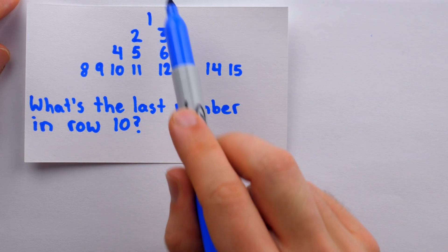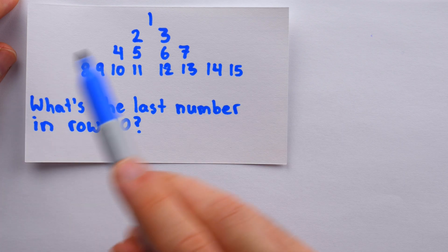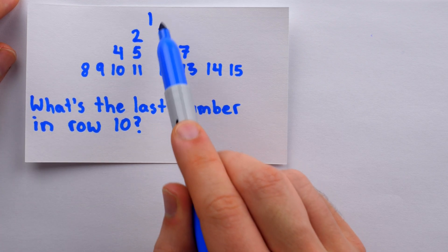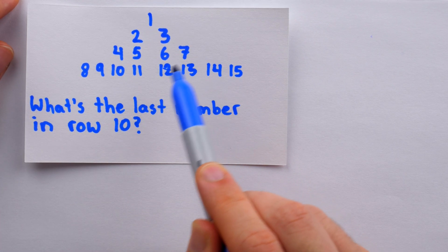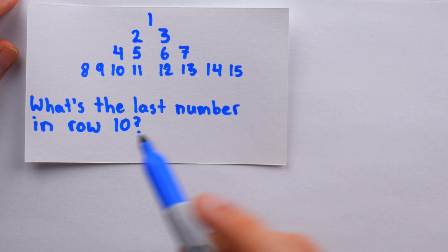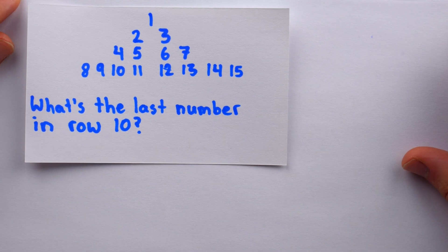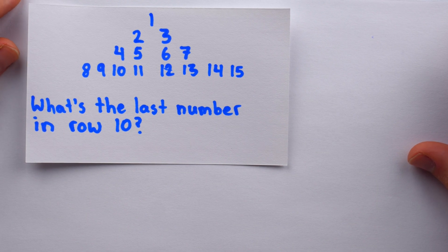All right, here is our second problem. We're given this number triangle where each row is doubling in length. This row has length 1, then length 2, then length 4, then length 8, and so on. Still, the numbers are just counting up by 1. And we're asked, what's the last number in row 10? Well, we need to see the powers of 2 here.